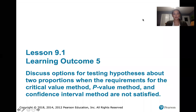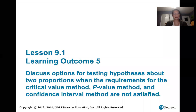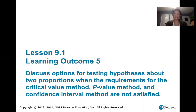In this video we discuss learning outcome number five from Lesson 9.1, which is about our options for testing hypotheses about two proportions when the requirements for the critical value method, the p-value method, or the confidence interval method are not satisfied.